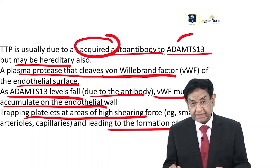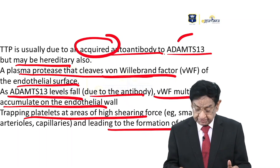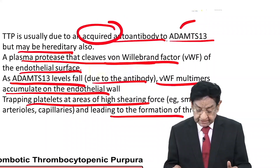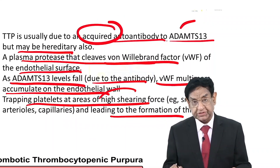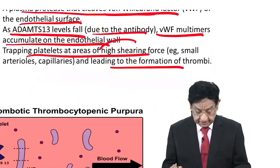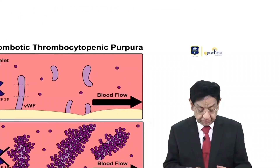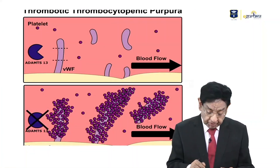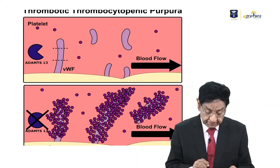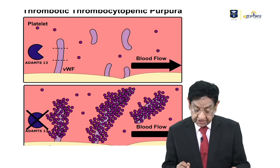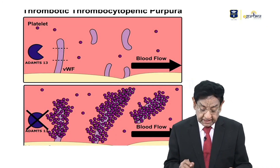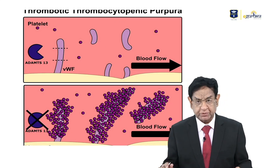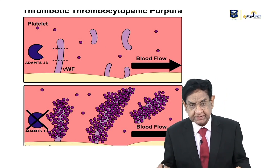Remember, microthrombi usually occur not in the big arteries but in small arterial capillaries where the high shearing force is present. Let me show you a picture. This is the von Willebrand factor, and this is ADAMTS-13, which normally breaks it down and chops it into small pieces.